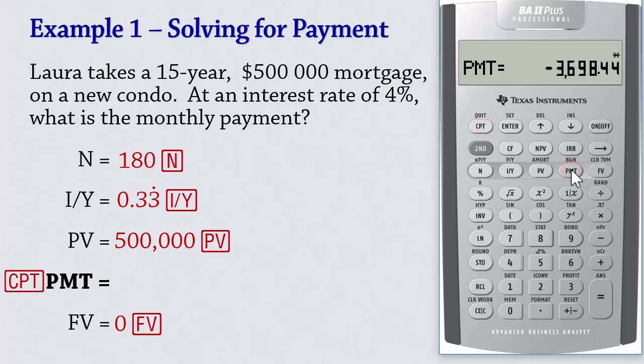We then compute payment, which gives 3698.44. Note that the value is negative because we input the present value as positive.